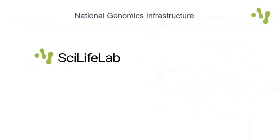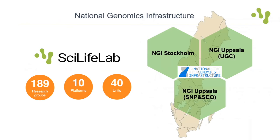So who are we at the National Genomics Infrastructure? SciLifeLab hosts almost 200 research groups, 10 platforms, and 40 units. NGI is part of the genomics platform and we are the largest unit at SciLifeLab in terms of both number of projects and number of users. We are a national research infrastructure physically located at three places: Stockholm, Uppsala Genome Center, and Uppsala SNP and Seek Technology Platform.